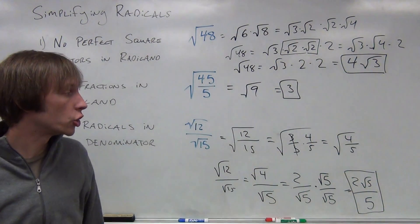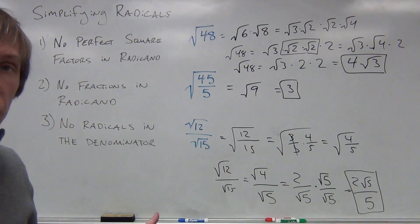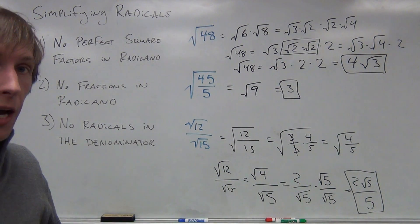There's our final answer. 2 radical 5 over 5. Another way to say that would be 2 fifths times the square root of 5.